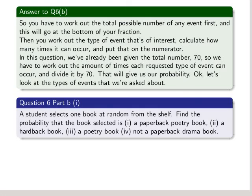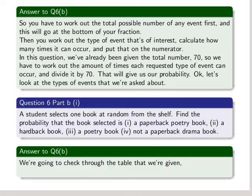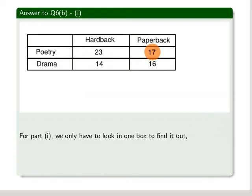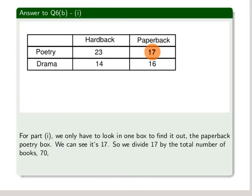Let's look at the types of events that we're asked about. A student selects one book at random from the shelf. Find the probability that the book selected is (1) a paperback poetry book, (2) a hardback book, (3) a poetry book, and (4) not a paperback drama book. We're going to check through the table that we're given and pull out the number of the different types of combinations we're asked about. So the first one, we have to look in only one box to find it out, the paperback poetry box, and that's 17. So we divide 17 by the total number of books, 70, and therefore get the probability to be 17 over 70, which equals 0.43.